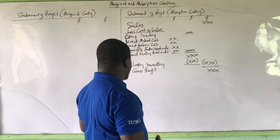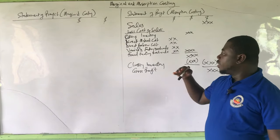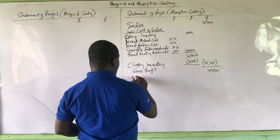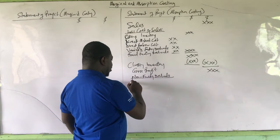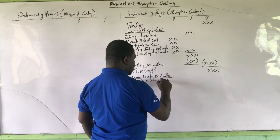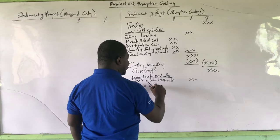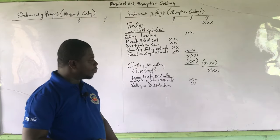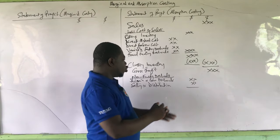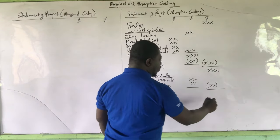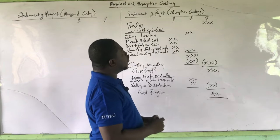Having gotten our gross profit, the next thing is to take out the non-factory overheads — those are the expenses we are talking about. We take out our non-factory overheads, which include administrative and general overheads, and then selling and distribution overheads. There are times when selling overheads will be different from distribution overheads, so you show them accordingly. Once we find our non-factory overheads and take that out of the gross profit, the final figure becomes our net profit. This is how to arrive at your net profit from the absorption costing technique.